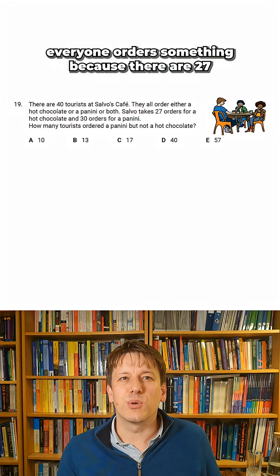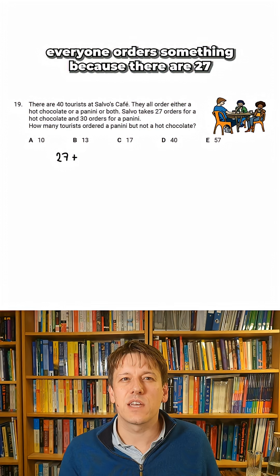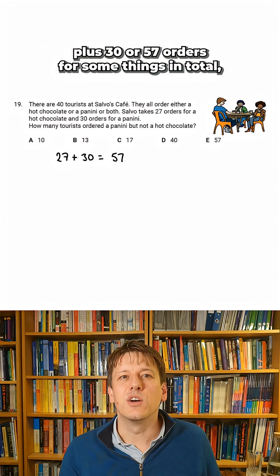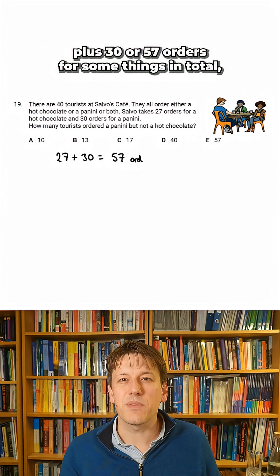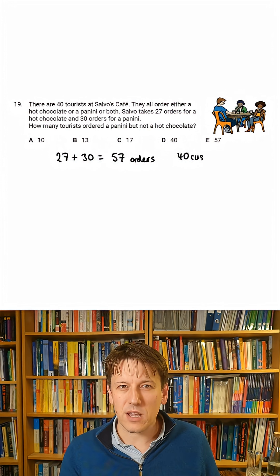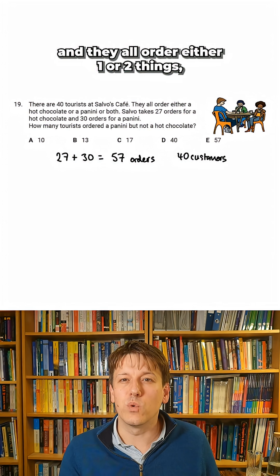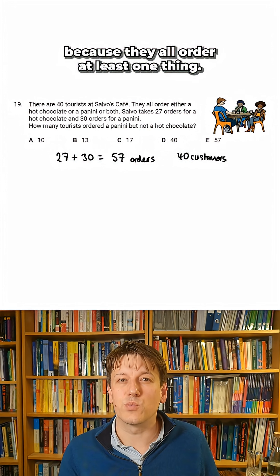It's really important here that we know that everyone orders something because there are 27 plus 30 or 57 orders for somethings in total. But there's only 40 customers and they all order either one or two things because they all order at least one thing.